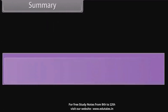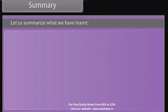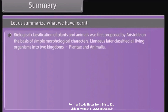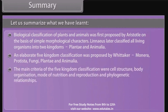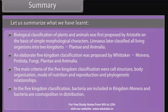In summary, biological classification of plants and animals was first proposed by Aristotle on the basis of simple morphological characters. Linnaeus later classified all living organisms into two kingdoms: Plantae and Animalia. An elaborate five kingdom classification was proposed by Whittaker — Monera, Protista, Fungi, Plantae, and Animalia. The main criteria of the five kingdom classification were cell structure, body organization, mode of nutrition and reproduction, and phylogenetic relationships. In the five kingdom classification, bacteria are included in Kingdom Monera and are cosmopolitan in distribution, showing the most extensive metabolic diversity.